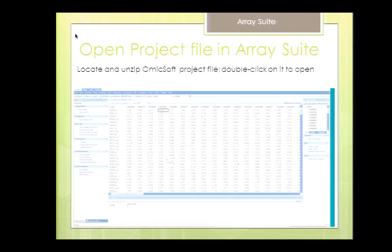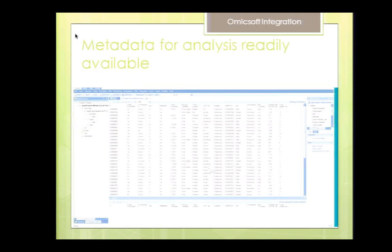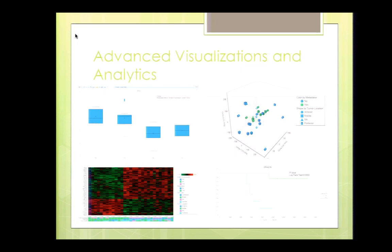The whole export takes about five seconds, and you're immediately able to open it in Array Studio. I know it's very small on screen, but the presentation will be online. Basically you can see the same curated columns — the set is ready for exploration. You can then take advantage of commercial-grade visualization tools in OmicSoft, and one of my favorites is the PCA analysis, where you can easily identify samples that should be excluded based on data quality.